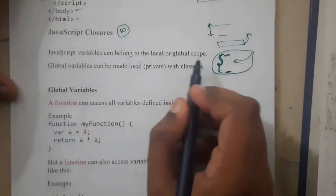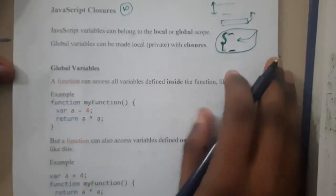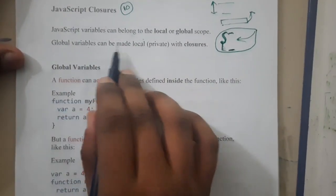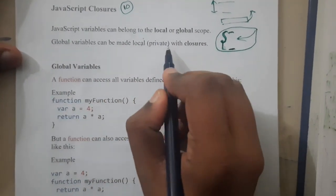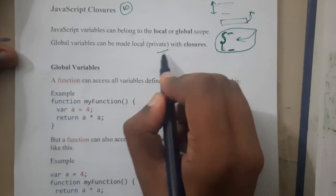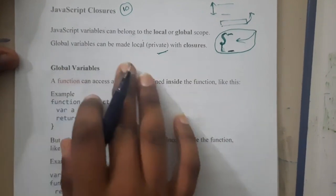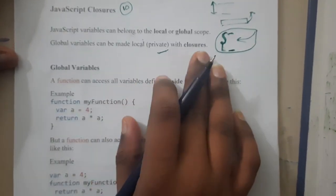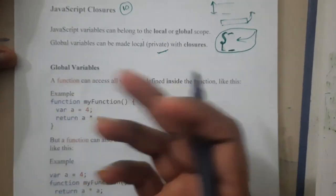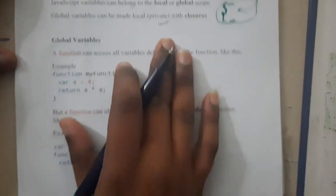Global variables can be made locally private. In JavaScript, it seems I didn't find any proper example for this. We can make JavaScript variables locally—the global variables also we can make locally, it seems.